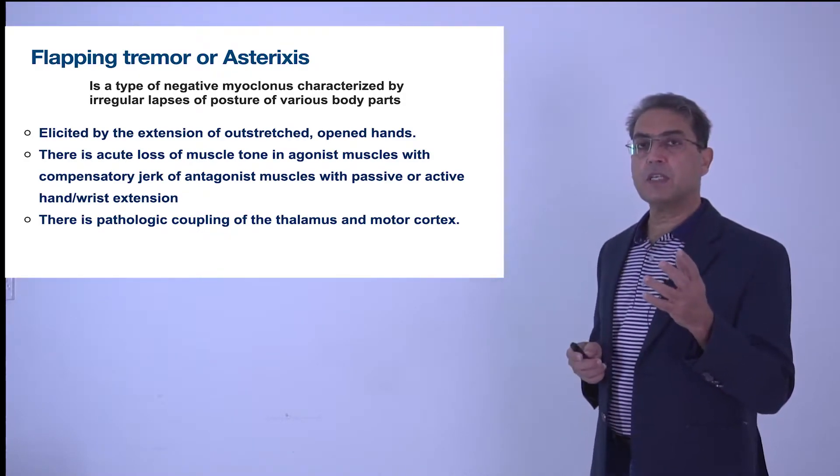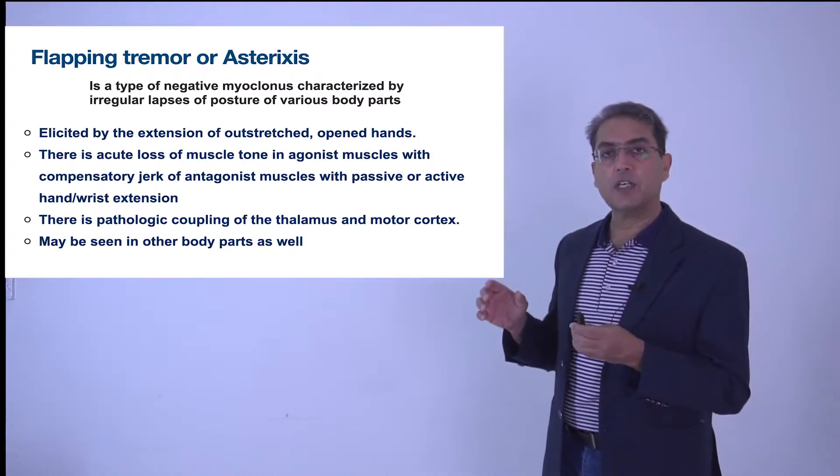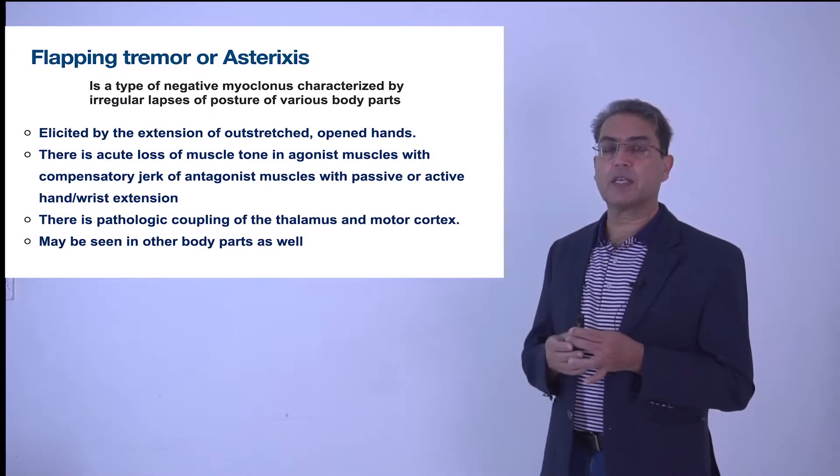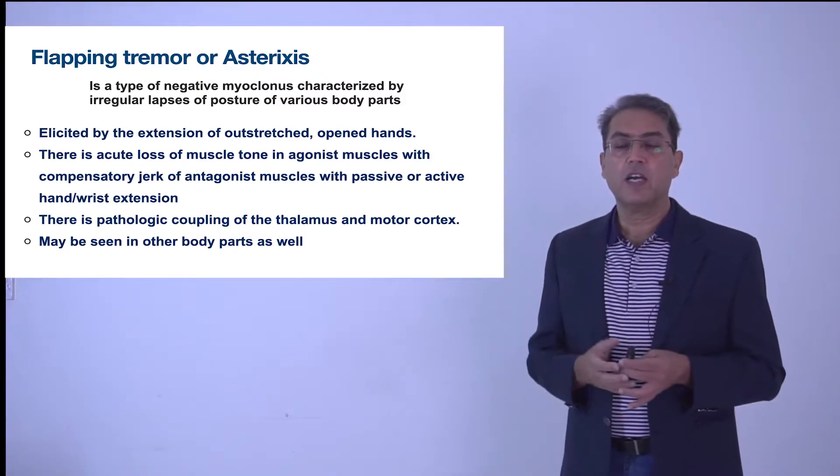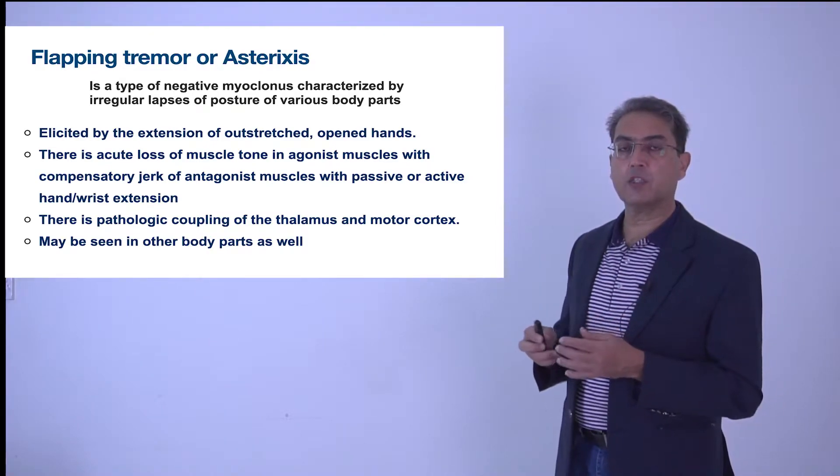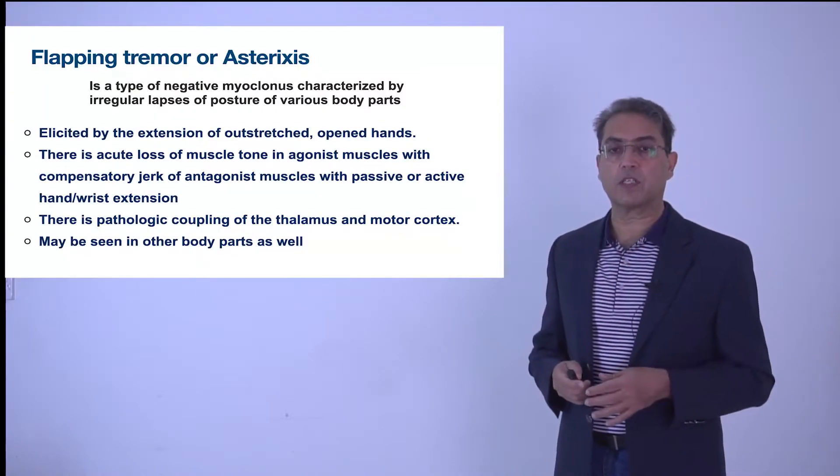Now it may be seen in other body parts as well. We usually demonstrate this in the outstretched hand with extended wrist, but if the patient is lying supine and cannot stretch the hands, in its very developed forms you can flex the hip joint and knee joint and see the knee falling out like this.